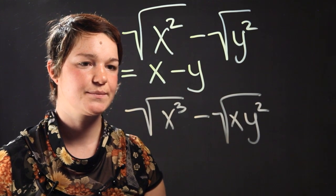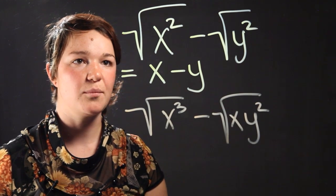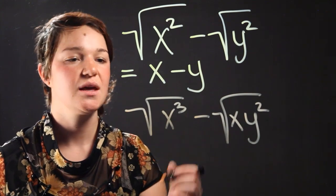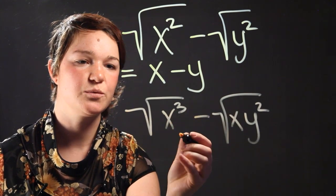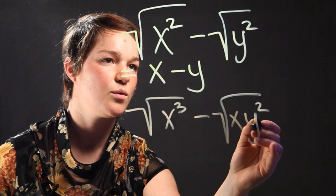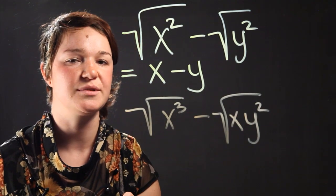How do we solve this? So the first step, once again, is going to simplify all of our radicals. We have x cubed, which is going to simplify, and we have another perfect square, y squared, which is going to simplify as well.